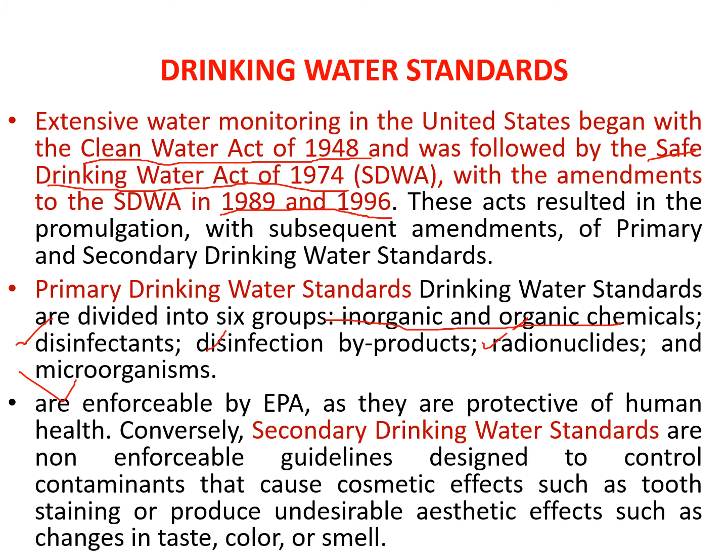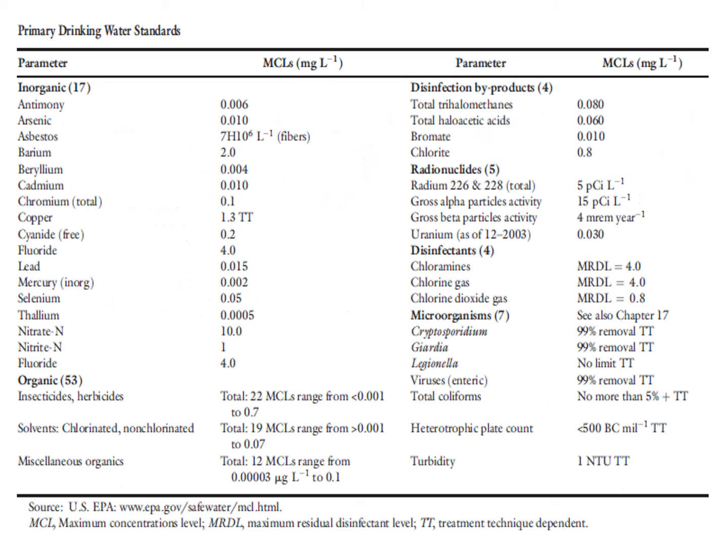There are two types of drinking water standards: primary drinking water standards, which are compulsory, and secondary drinking water standards, which are non-enforceable guidelines. The table shows the MCLs — maximum concentration levels — of different organic and inorganic pollutants permitted in water.